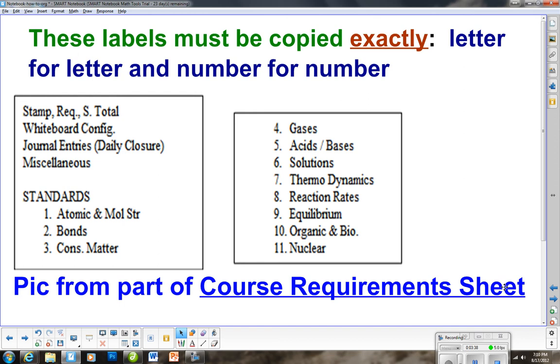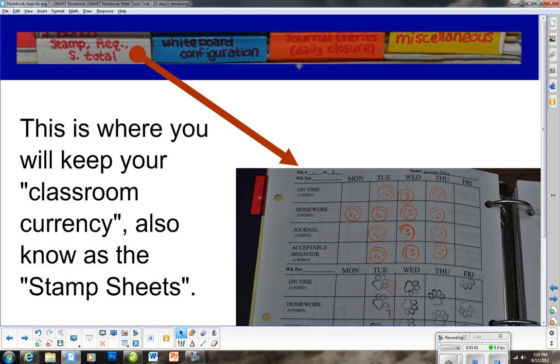As we look at the first four, the first four have the stamp requirements, the stamp sheets, the course requirements, and the stamp total sheet. This is why you keep your classroom currency, also known as the stamp sheet. Some days there will be few if any stamps, some days there will be holidays. Typically every week we get a different color and a different stamp.